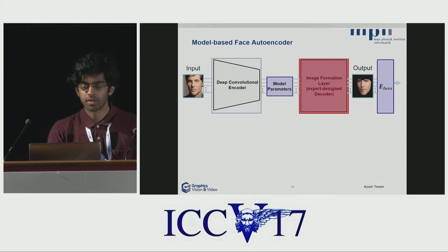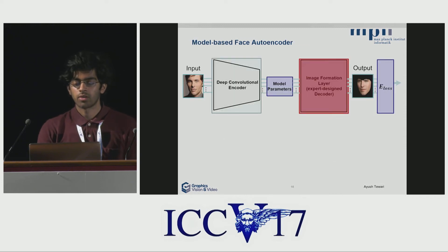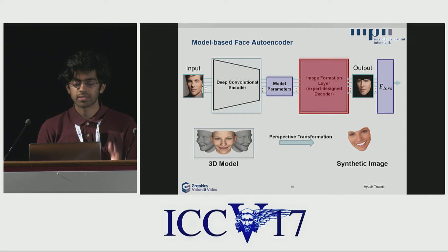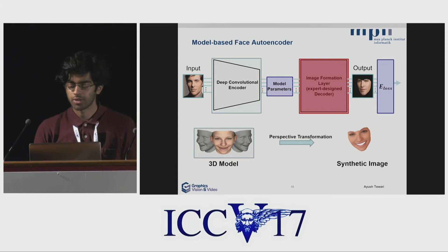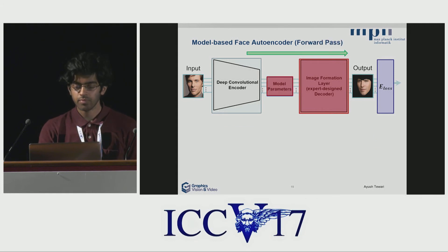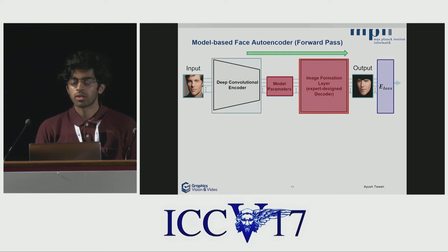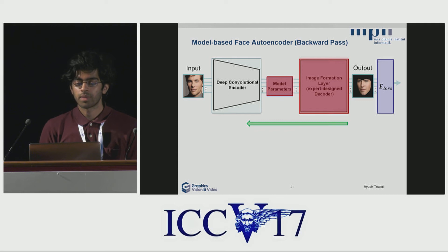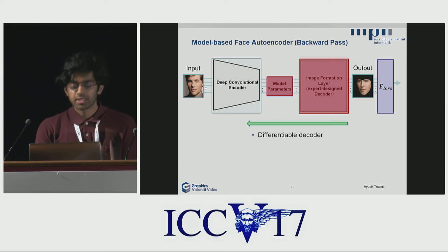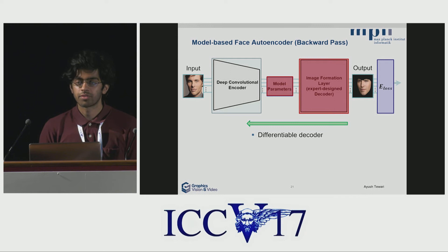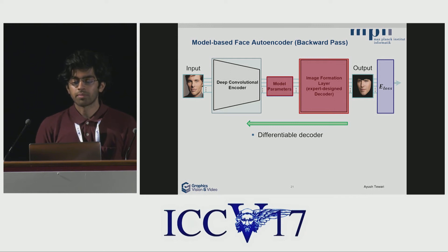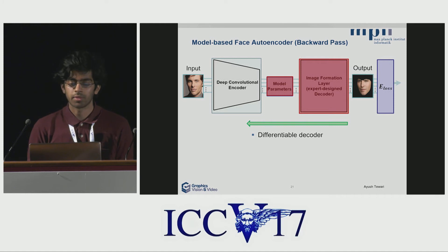Once we have computed this model, our image formation layer takes it, does a perspective transformation, and gives us a synthetic image of the same face. To train the network we also need to do backpropagation. This is possible because the decoder is differentiable, which means we can compute the gradients of the rendered image with respect to the parameters of our model.